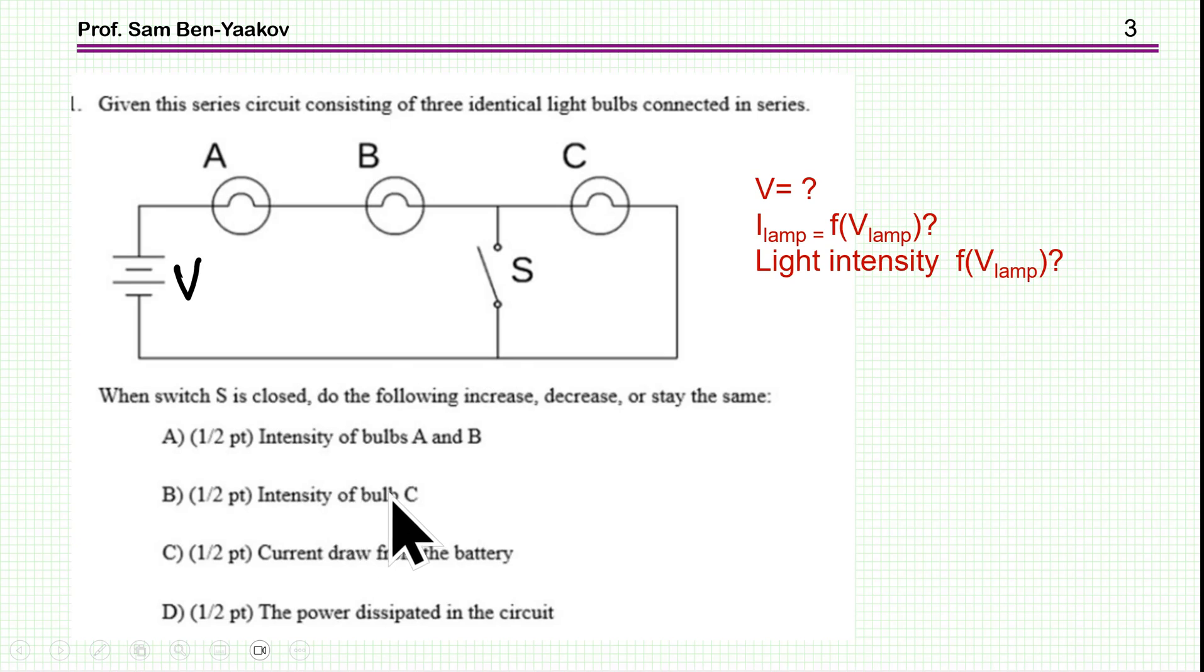Intensity of bulb C and current drawn from the battery. Is it going up or down or stays the same? And the power dissipated in the circuit. Is it again going up, down or stays the same?